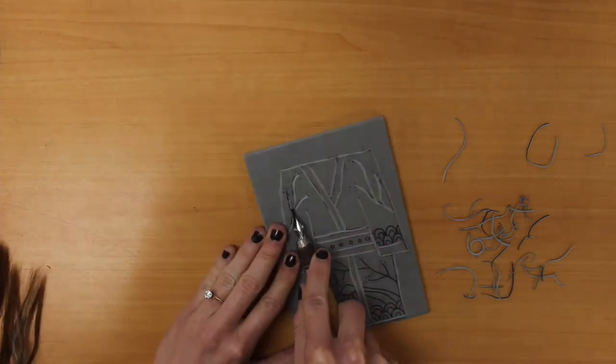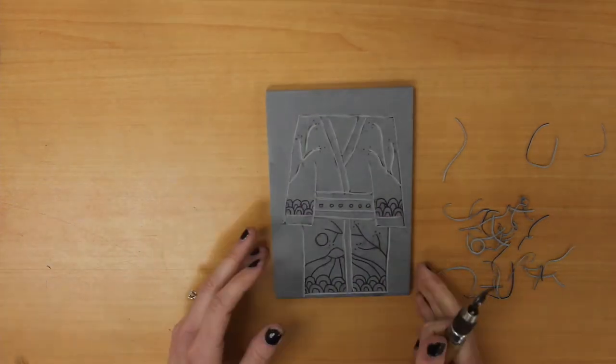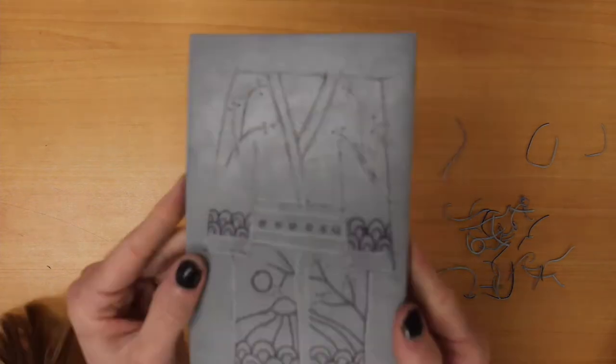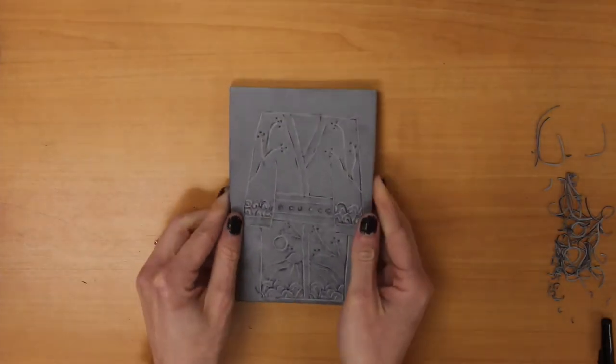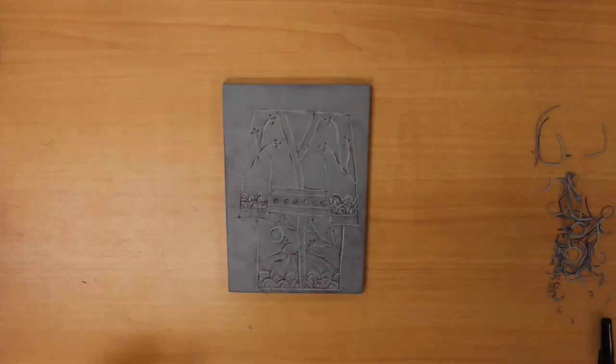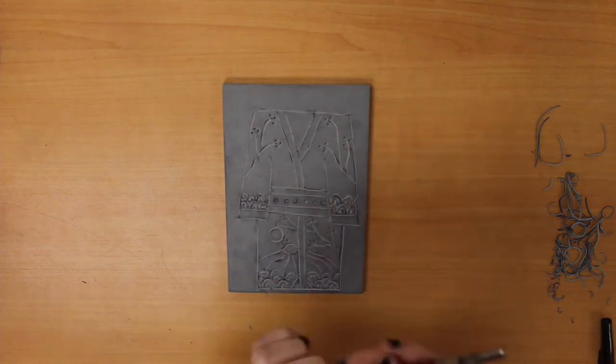Now go ahead and grab, once you have finished all those details, your number three. Your number three is what we're going to use to carve away the background because when we print these we definitely would like to see just our kimonos.